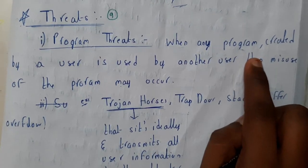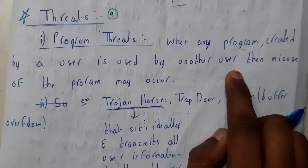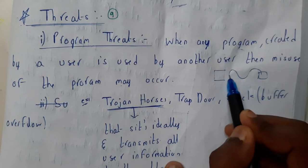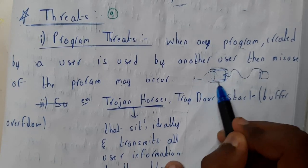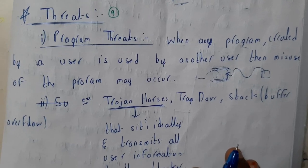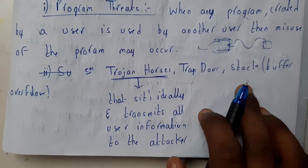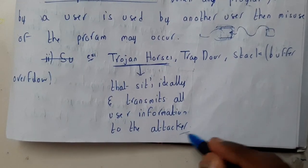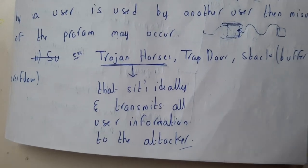When any program created by a user is used by another user, then misuse of that program may occur. So when you created a program and some other user successfully entered and is now misusing it, this is called a program threat. Popular program threats include Trojan horse, trapdoor, and stack buffer overflow. Trojan horse sits idle and transmits all your user information — usernames, passwords, and everything — to the attacker.